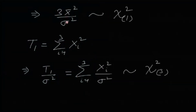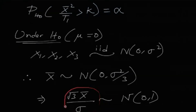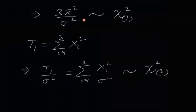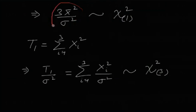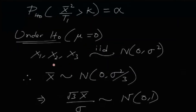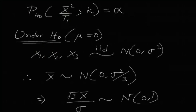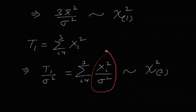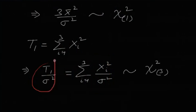Also, t1 = Σxi², so t1/σ² = Σ(xi/σ)². Since each xi ~ Normal(0, σ²) under H0, each xi/σ ~ Normal(0,1), so each (xi/σ)² ~ χ²(1). Being independent, their sum t1/σ² ~ χ²(3).